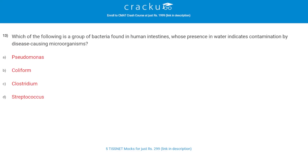Which of the following is a group of bacteria found in human intestines whose presence in water indicates contamination by disease-causing microorganisms? The correct answer is B, coliform bacteria, which are commonly found in the feces of warm-blooded animals.